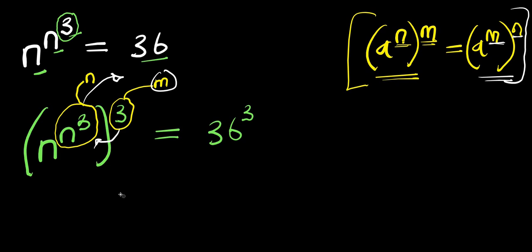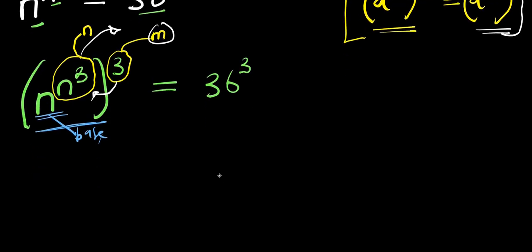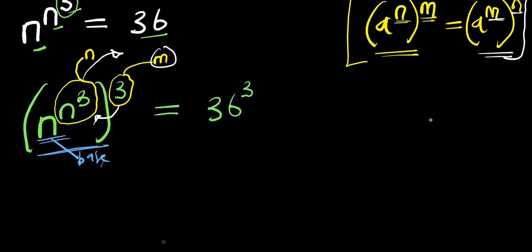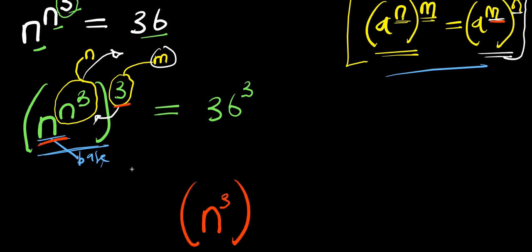We are simply going to recopy this. The base n here is still constant and doesn't change. Using the identity, we will have n raised to the power of m — our m is 3 — and this is raised to the power of n, which is n power 3. And this equals 36 to the power of 3.